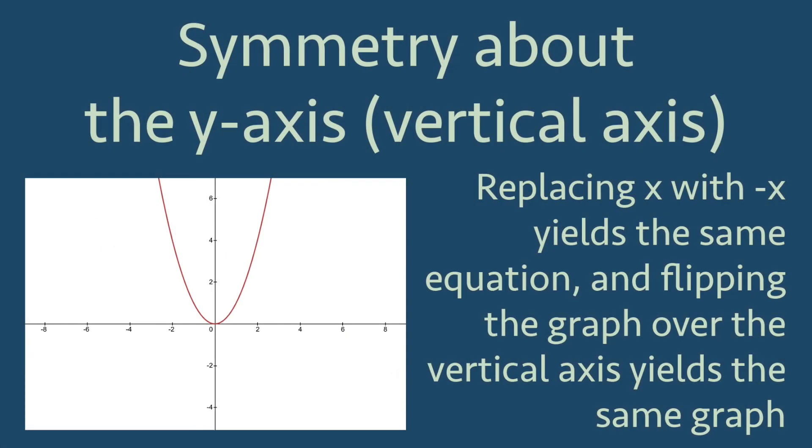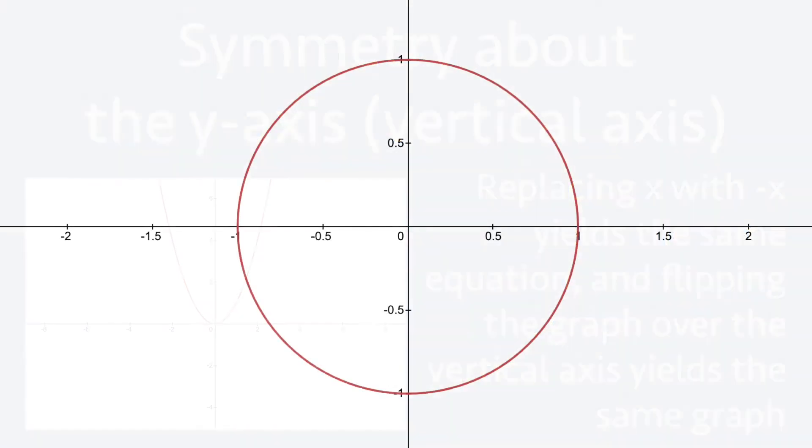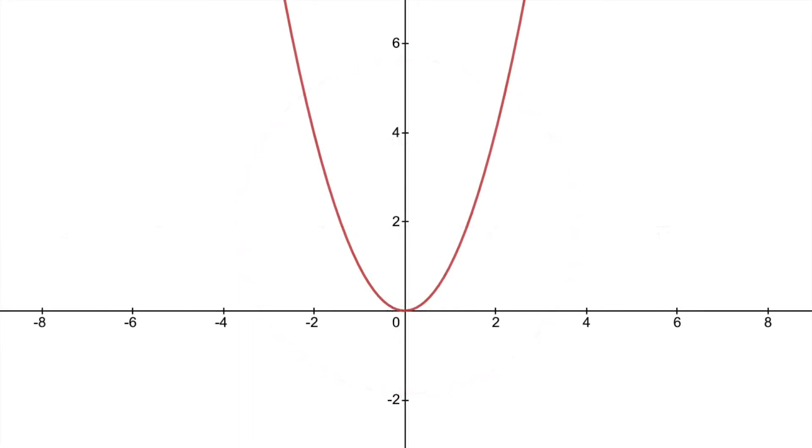And finally, symmetry about the y-axis, or vertical axis. In the same way we saw with symmetry about the x-axis, an equation for a graph is symmetric about the y-axis if replacing x with negative x yields the same equation. The circle we saw before has this quality, but so does the parabola y equal x squared. We can see this in the following graph.